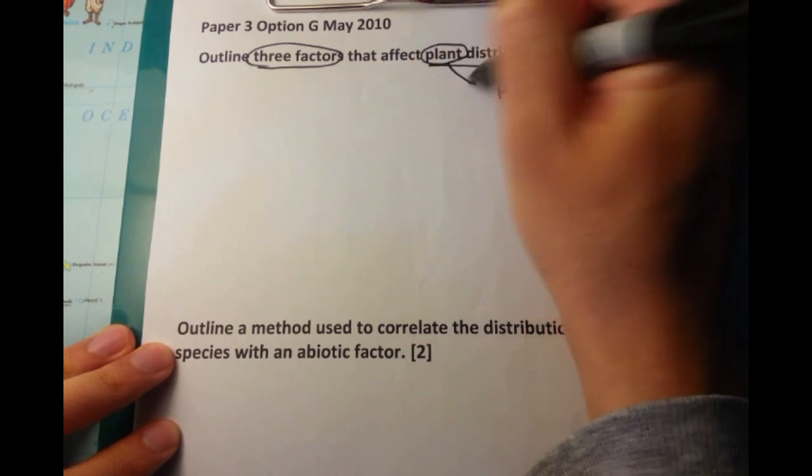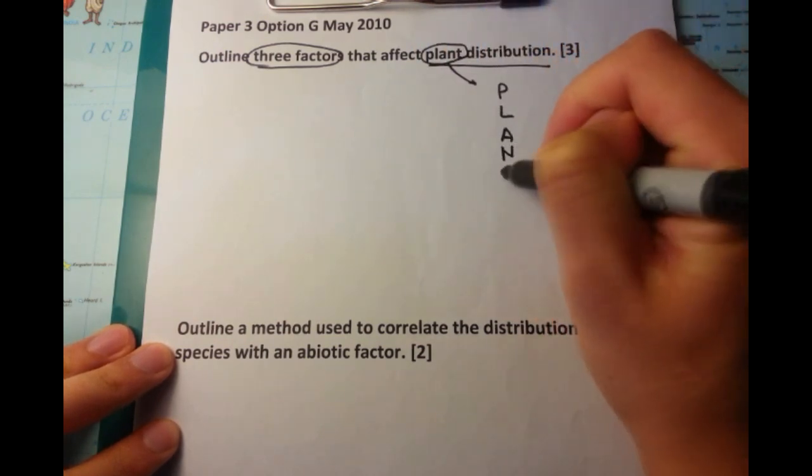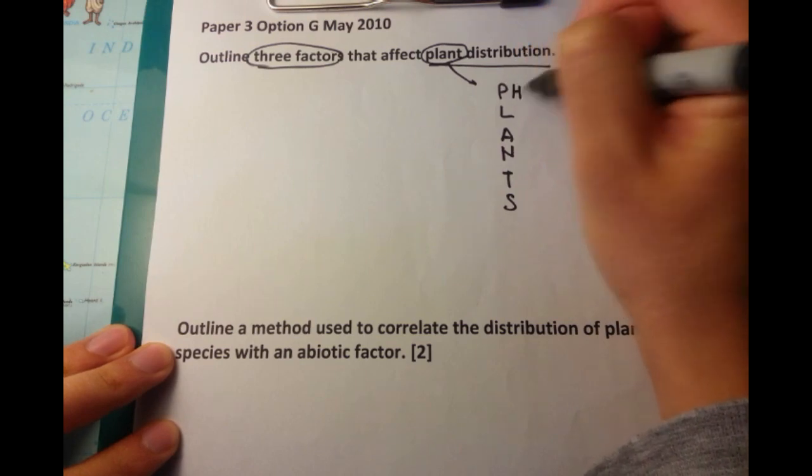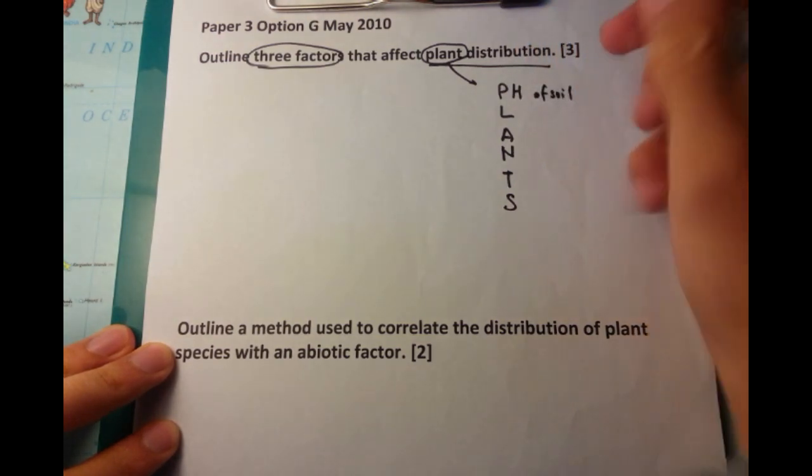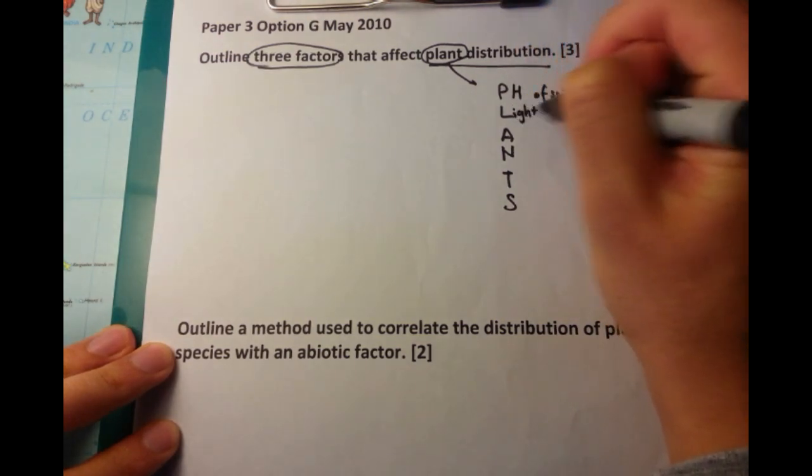I've got this clever little mnemonic that I was thinking about for you guys. If you just write PLANTS all the way down here, these are the different factors that can affect plant distribution.